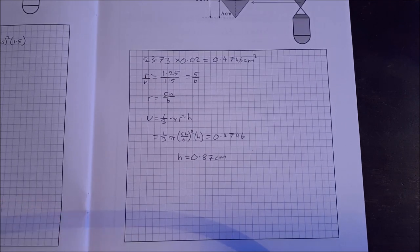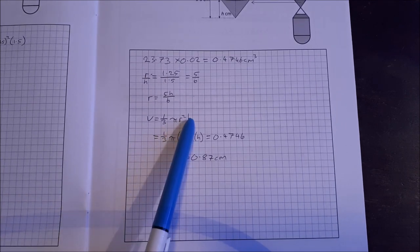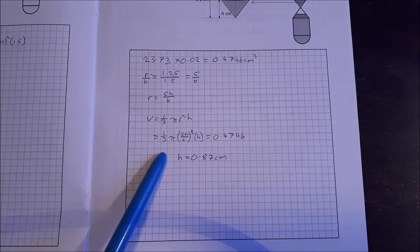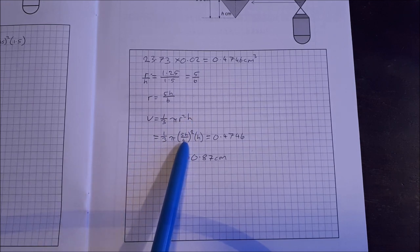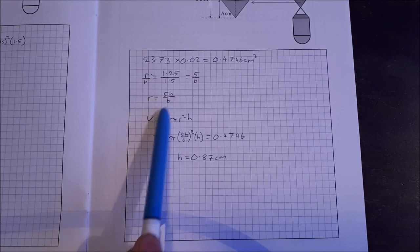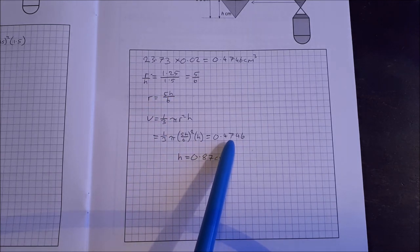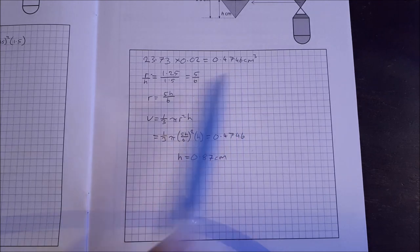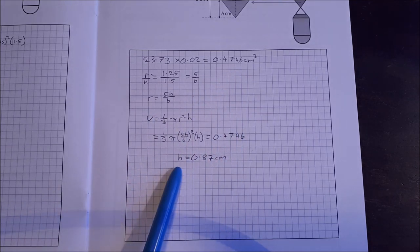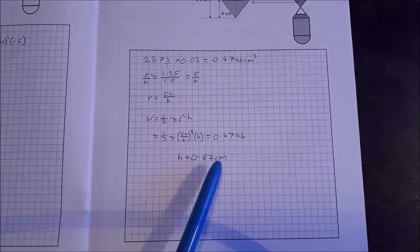So the volume then is a third pi R squared H for a cone. We're subbing in R, which we said was 5H over 6. And you let it equal to 0.4746 from up here. And work it out. You get H is equal to 0.87 centimeters.